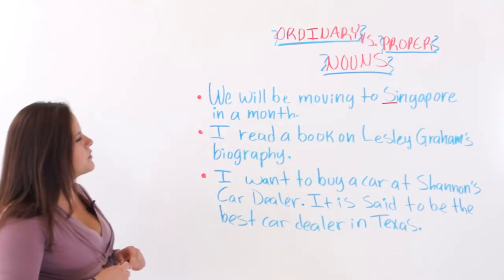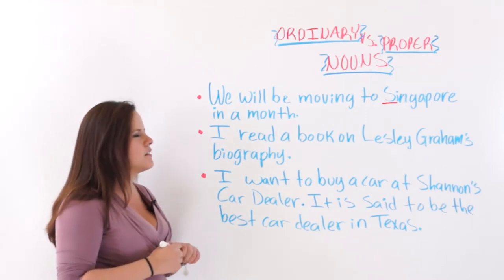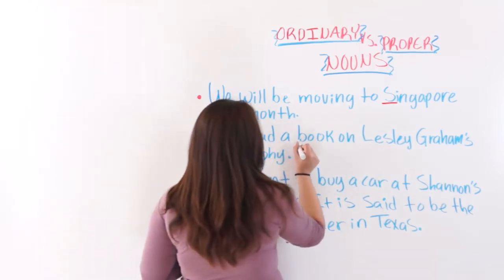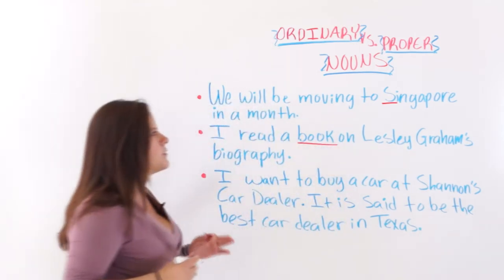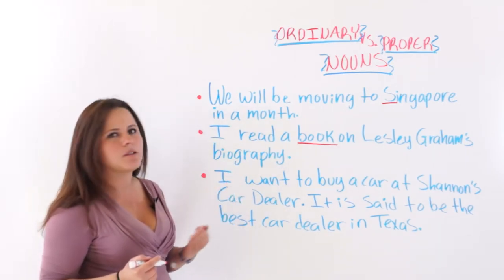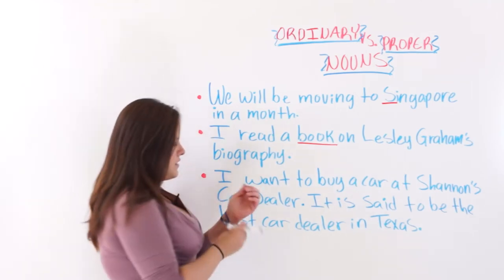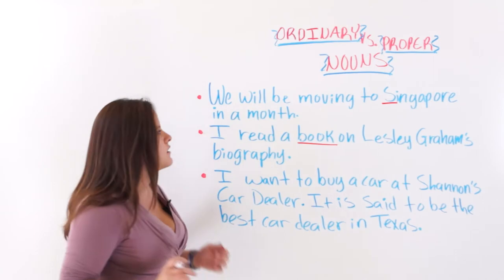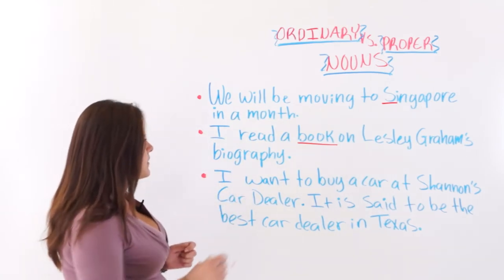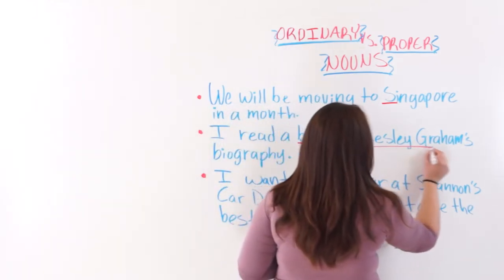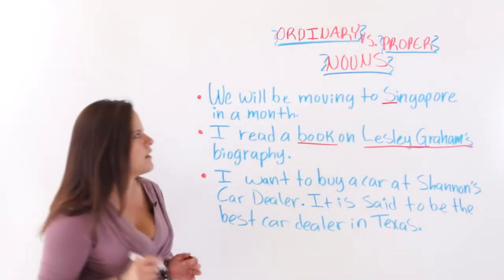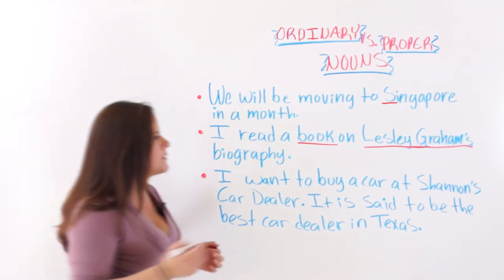The next example: 'I read a book on Leslie Graham's biography.' We have a lot of nouns here — we have two, actually. 'Book' is one of the nouns. It is not a proper noun, that is why it is not capitalized — it is a general thing. 'Leslie Graham' is our second noun, and that is a proper noun.